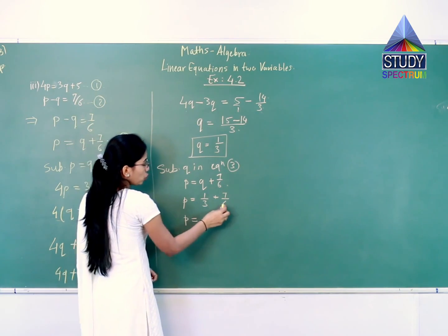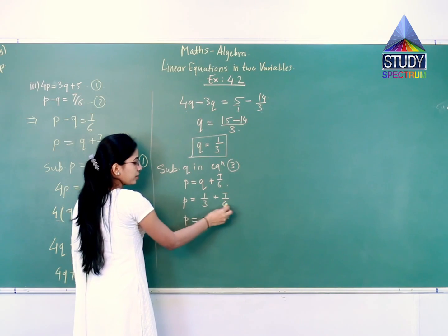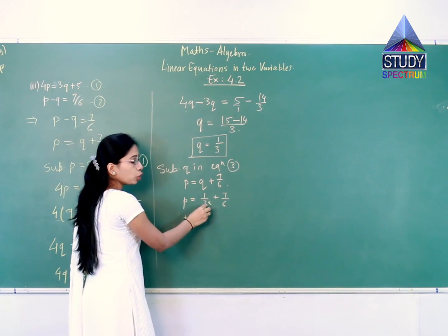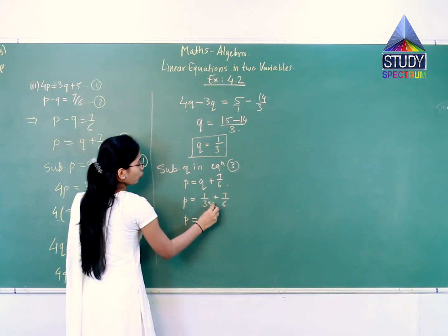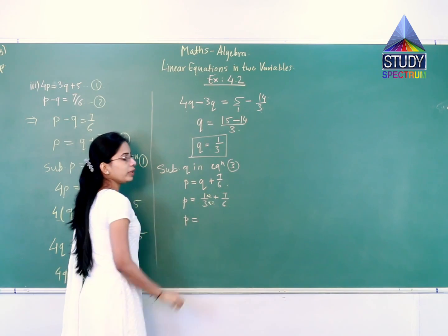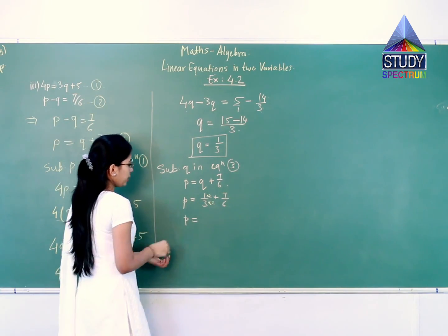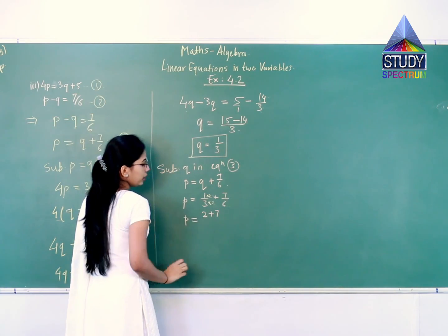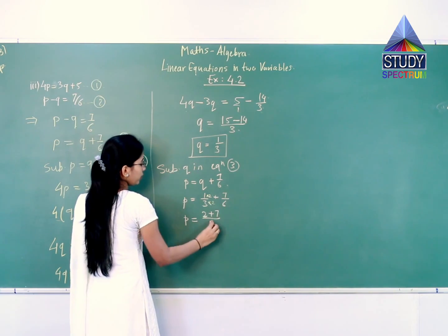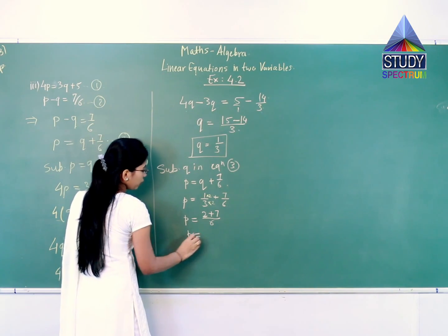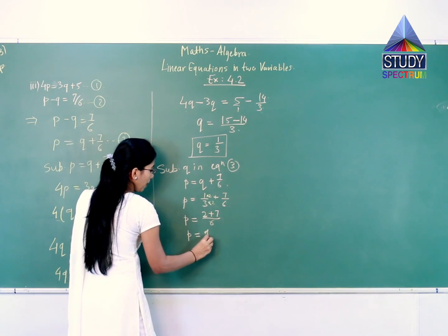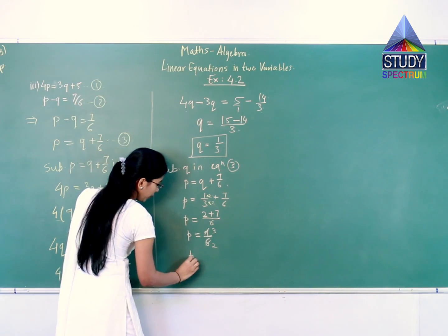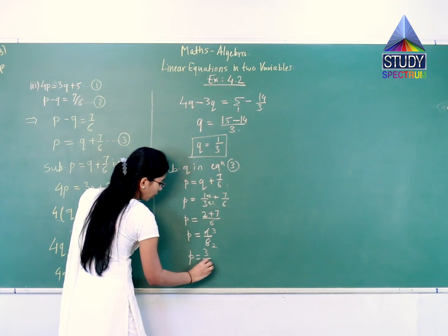6 is a multiple of 3, so in order to make the denominator 3 into 6, we have to multiply by 2, and we will multiply the numerator also. So we get 2 plus 7 in the numerator upon 6 in the denominator. P is equal to 9 upon 6. 3 threes are 9, 3 twos are 6, so P we got as 3 upon 2.